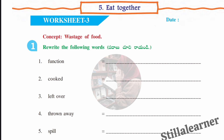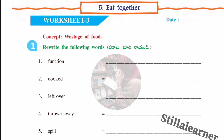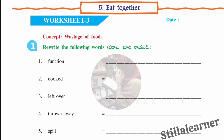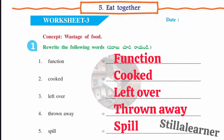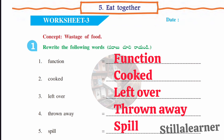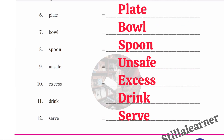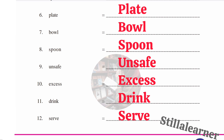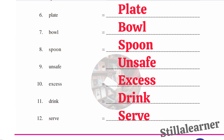Now we'll see the third worksheet — the concept is 'Wastage of Food.' In the first section, the words to rewrite with capital first letters are: function, cooked, left over, thrown away, spill, plate, bowl, spoon, unsafe, excess, drink, and serve.